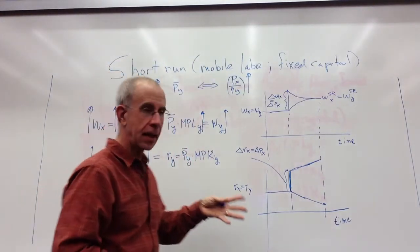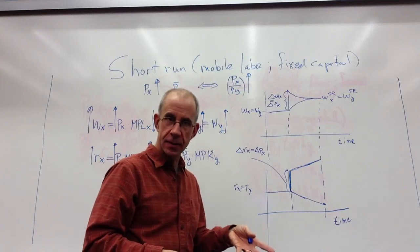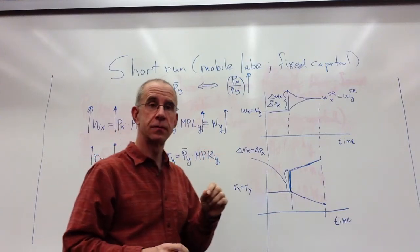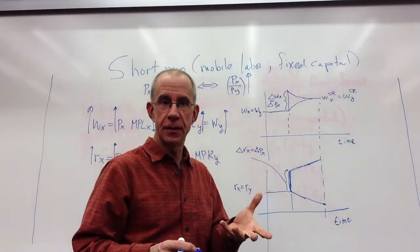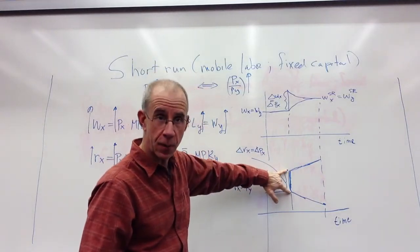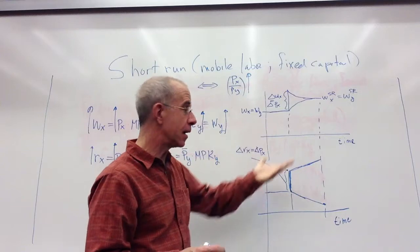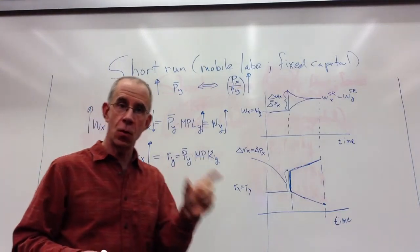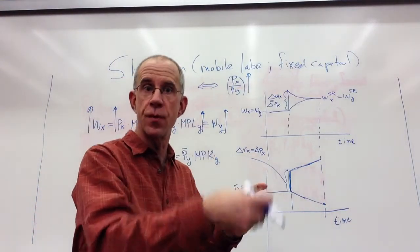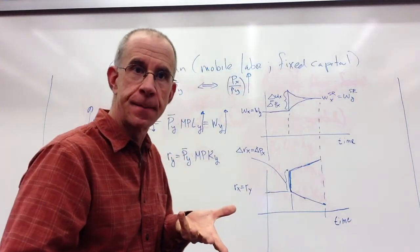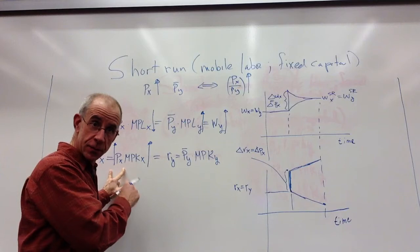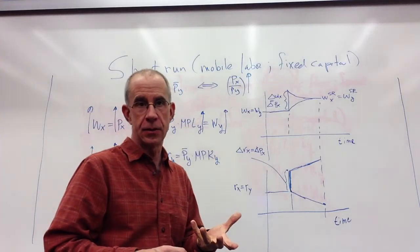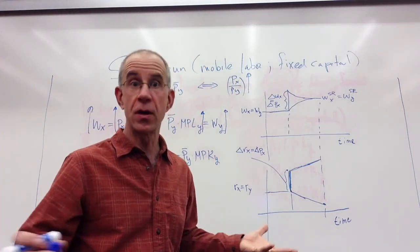Let's think about how much payments to capital change relative to the price rise. For the capital owners lucky enough to be in industry X, they've had the first bump from the price rise of the good that they sell and an additional increase in their payments because the marginal productivity of capital goes up. Capital owners in X can buy more of X and more of Y. They are clearly better off in terms of their purchasing power, regardless of what they buy.